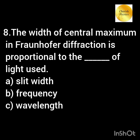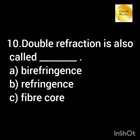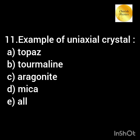The width of central maximum in Fraunhofer diffraction is proportional to the dash of light used. Polarized light can be produced by dash. Double refraction is also called as dash. Which of the following is an example of a uniaxial crystal?